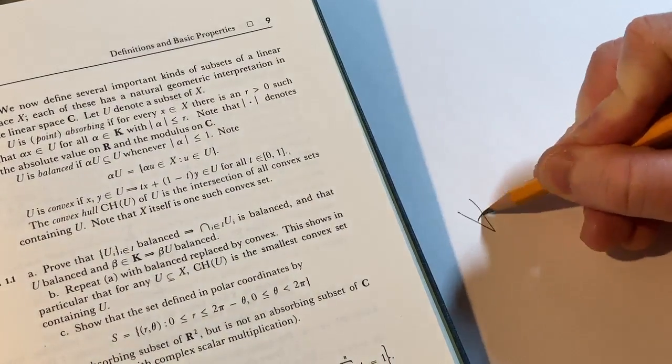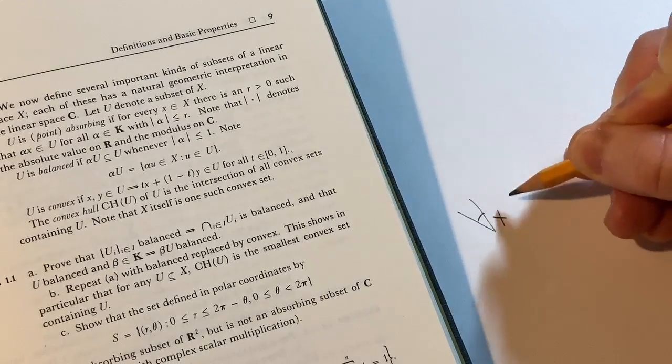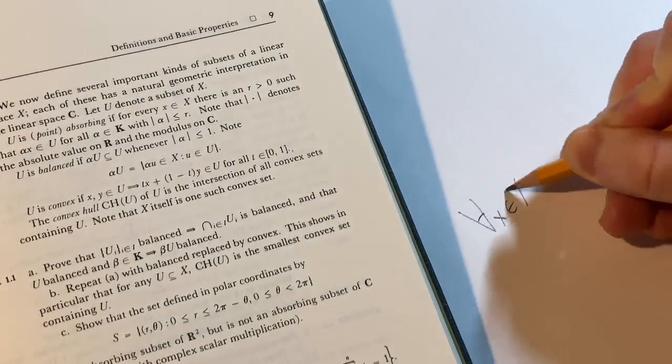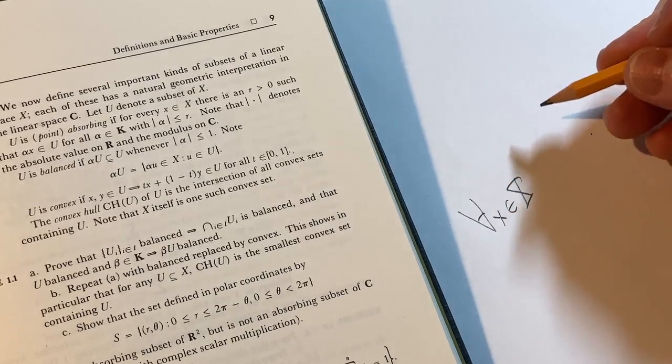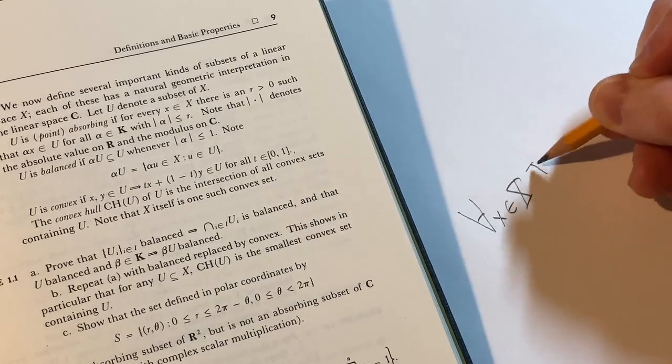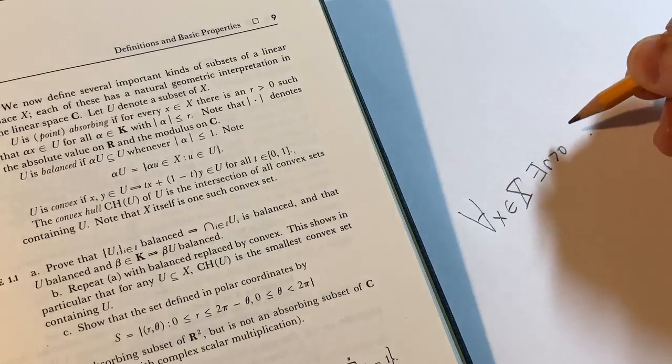You say, okay, for all, that means for all, that upside down A, for all X in X, notice my capital X, right? For all X in X, there exists an R greater than zero. So I would write there exists R greater than zero such that, so, you know, you're trying to learn.